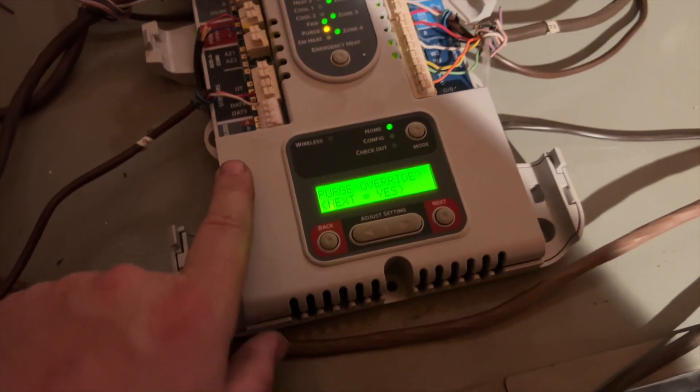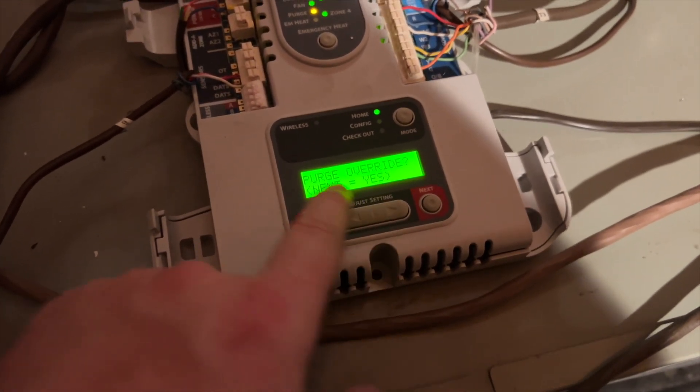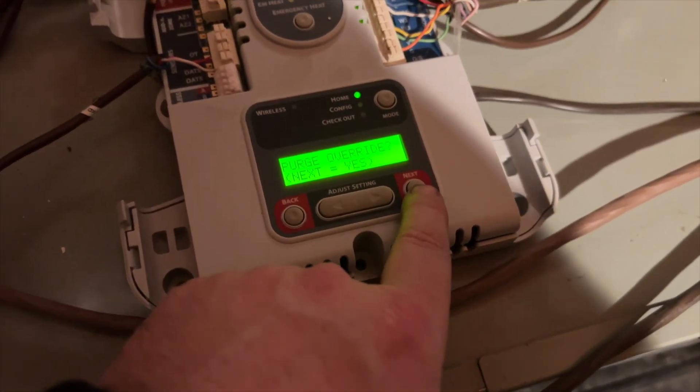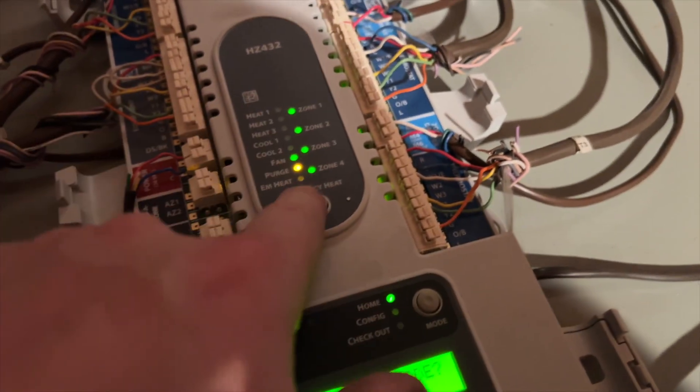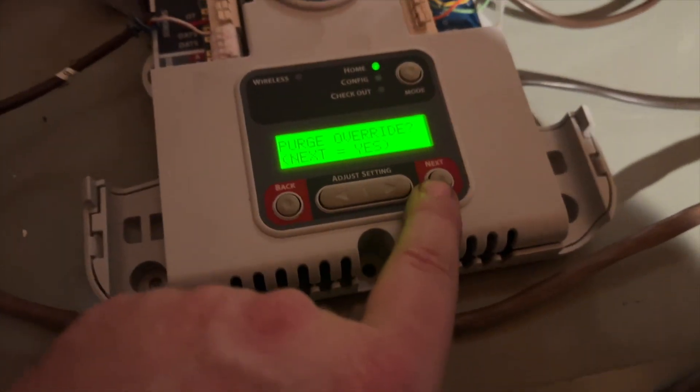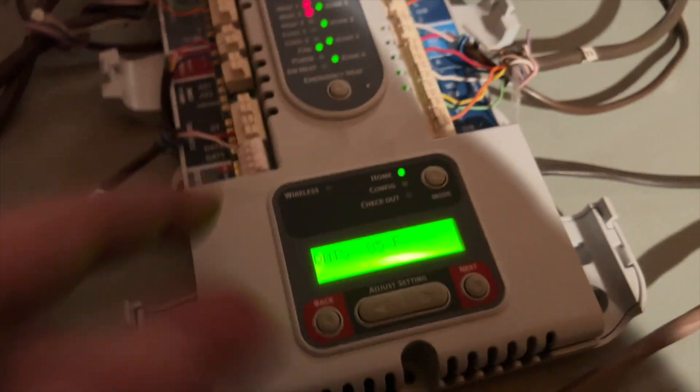So now it's in a purge. If we want to override it, we can just hit the next button and it'll do that. See the yellow light? That means it's a purge and it's calling for fan and it's opening all the dampers as per our settings. So we'll go ahead and skip that. Now you can see the fan shut off and now it's back to receiving the calls from the stats.